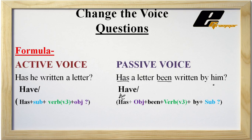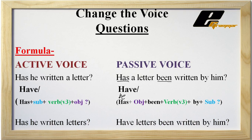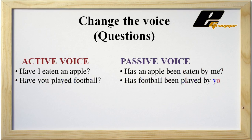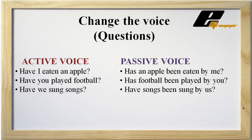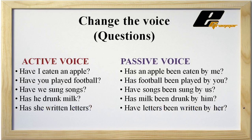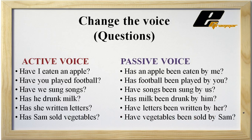If the object is plural, we use 'have'. For example: 'Has he written letters?' In passive voice becomes: 'Have letters been written by him?' We use 'have' because the object 'letters' is plural. Another example: 'Have vegetables been sold by Sam?'